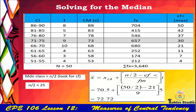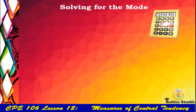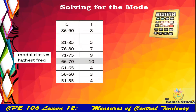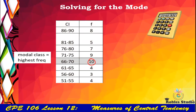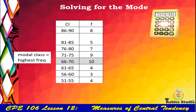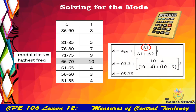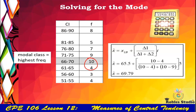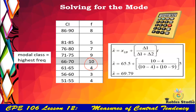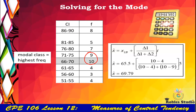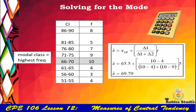To solve for the mode, we first identify the modal class — the class with the highest frequency, which is 10. We then use the formula with delta 1 and delta 2. Delta 1 is found by subtracting the frequency below the modal class (4) from 10, and delta 2 is found by subtracting the frequency above it (9) from 10. Performing the computation and multiplying by the interval of 5 gives a mode of 69.79.